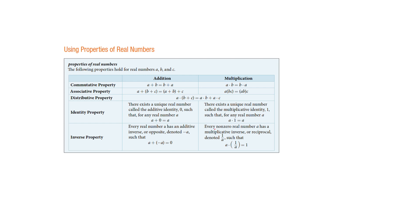The commutative property is the idea that it doesn't matter which way you drive to and from work — which way you do the commute. The length of the commute is still the same. So if you add a and b or b plus a, it doesn't matter. You still drove the same distance. It's the same for multiplication: you can multiply a times b or b times a, you get the same thing.